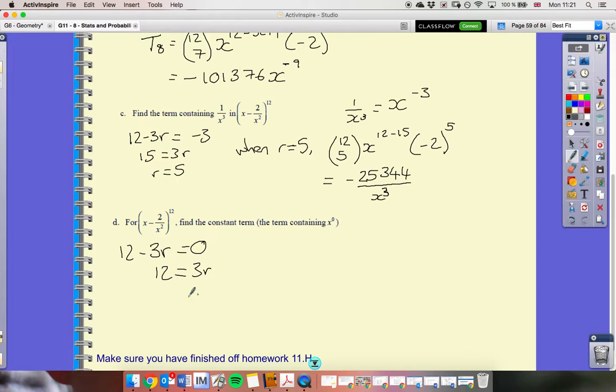So, that's easy to solve. We end up with r equals 4. In fact, it's the term before part c. So, when r is 4, I will have 12 choose 4.